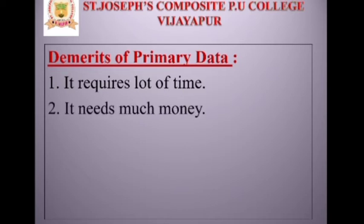Second demerit: it needs much money — it is more expensive. Primary data requires much money because investigators have to follow the whole study procedure, organizing materials and processes step by step. Each step requires a lot of expenditure, and a proper result requires following each and every step as well as organizing materials.